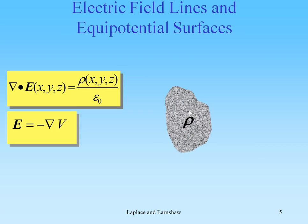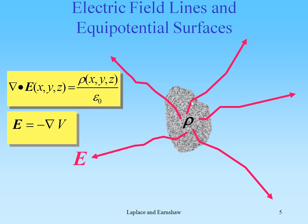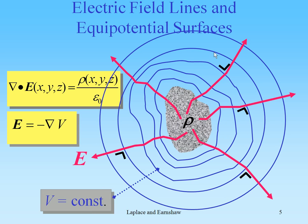Suppose we have a certain charge distribution given by rho in a certain volume. The electric field will look somewhat irregular in the neighborhood of the volume, but at larger distances the electric field will become radial. Similarly, the equipotential surfaces close to the volume will not be symmetrical, but at larger distances they will become spheres.